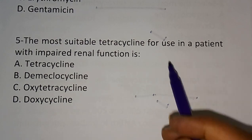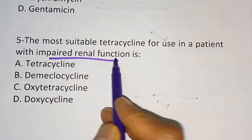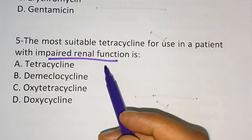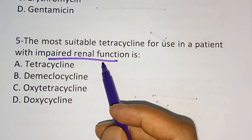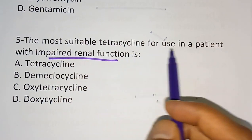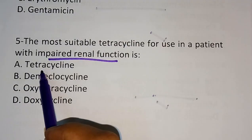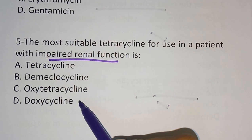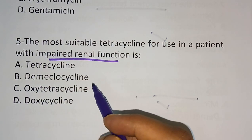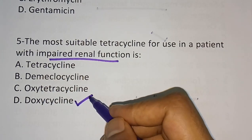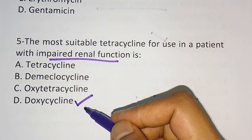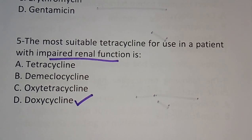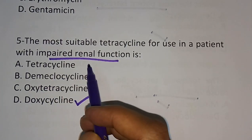Fifth question: which is the most suitable tetracycline for use in a patient with impaired renal function? Options: tetracycline, demeclocycline, oxytetracycline, doxycycline. The correct answer is doxycycline, because it has low renal toxicity and can therefore be safely used in patients with impaired renal function.